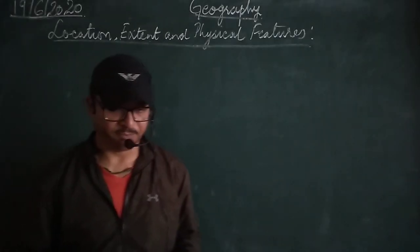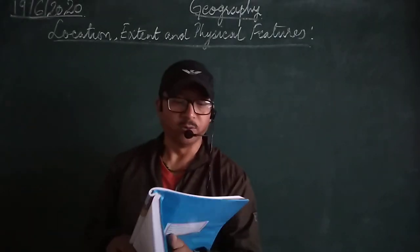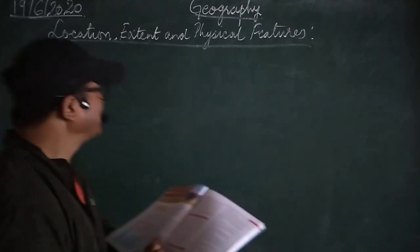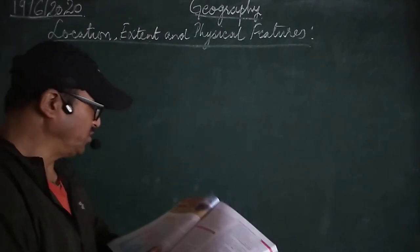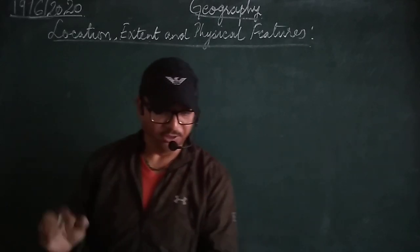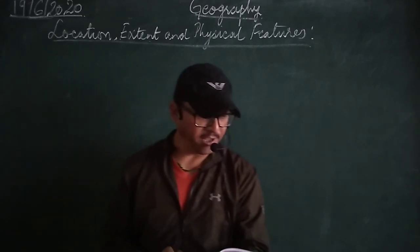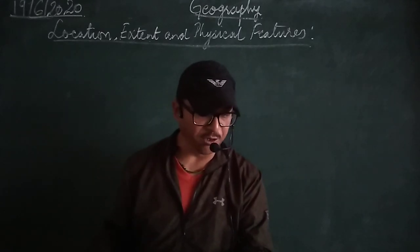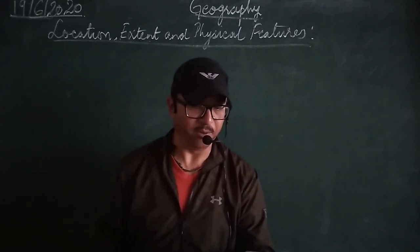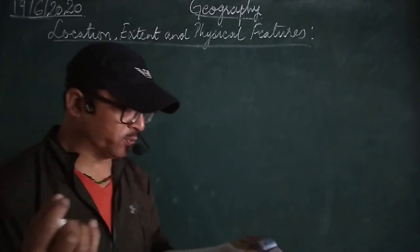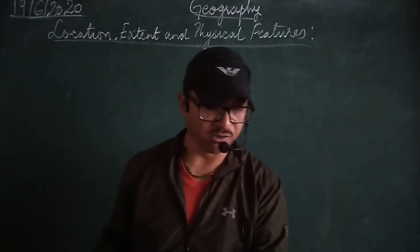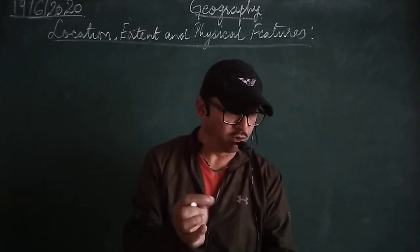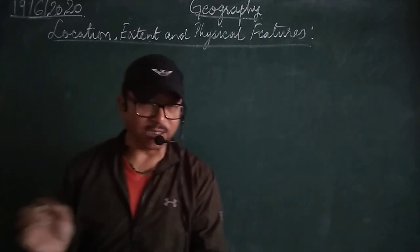Good morning children. Today we are moving towards chapter number seven, that is Location, Extent and Physical Features. In the previous class I already explained certain points like location and extent. Today we'll mostly focus on the physical features of India.